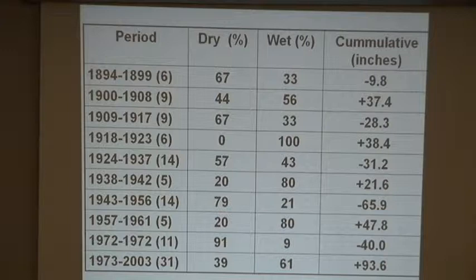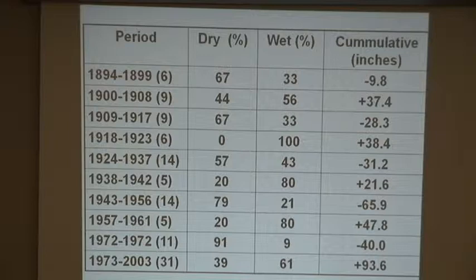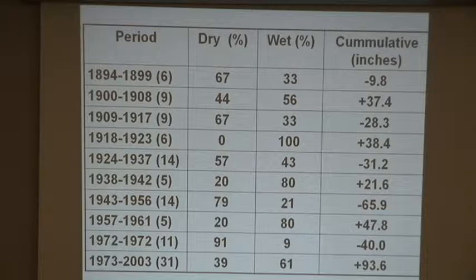This is just for Stillwater Oklahoma at the National Weather Station. You can see periods that range from six years, five years, fourteen years. Back in 2003, the last year I put these data together, that was a 31-year period where we had accumulated over 90 inches of additional precipitation above average. Some are remarkable because they're fairly short - in 1961, after the drought, almost 50 inches of extra precipitation, following that 66-inch deficit.